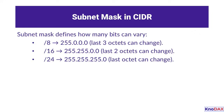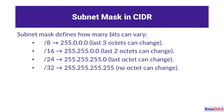Moving on, the /24 subnet mask, written as 255.255.255.0, allows only the final octet to vary while the first three octets are fixed. Finally, a /32 subnet mask, represented as 255.255.255.255, locks all four octets — meaning no bits can vary, identifying a single specific IP address. In summary, CIDR notations like /8, /16, /24, and /32 give us the flexibility to allocate and manage IP address spaces efficiently. Understanding this concept is essential for designing scalable and secure network architectures.